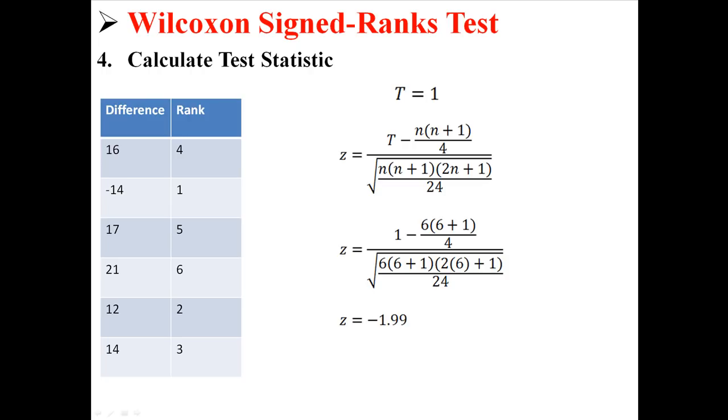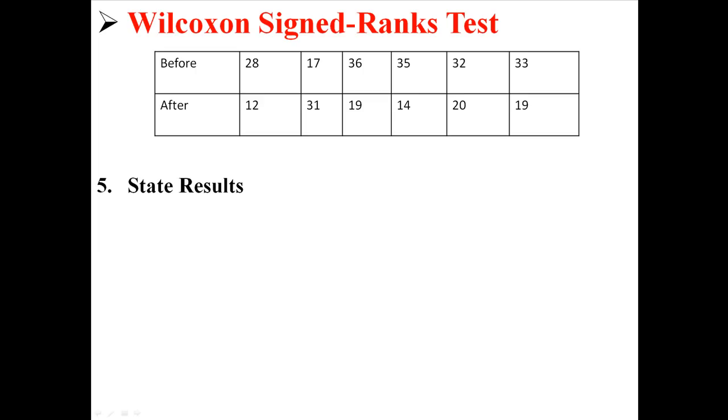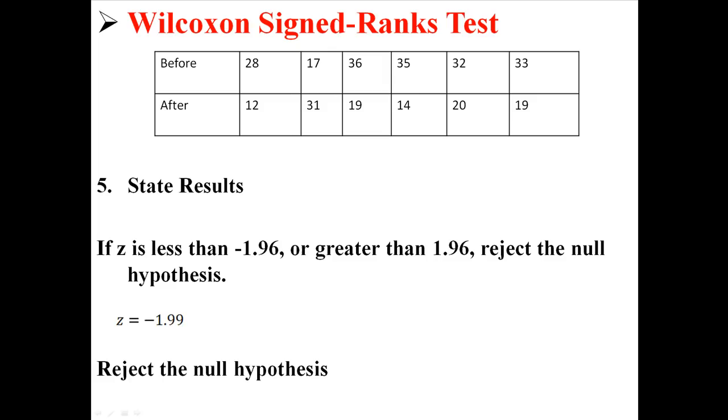So now we can go to our results. Remember we were going to reject if we had a z less than negative 1.96 or greater than positive 1.96. And we had a z of negative 1.99. That's just less than negative 1.96. So that means we can reject the null hypothesis. And we're going to conclude that there is a difference between the before and after groups using a Wilcoxon signed ranks test.